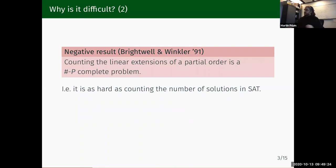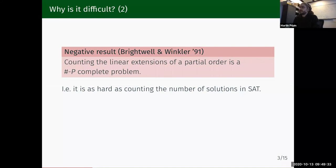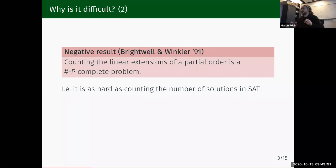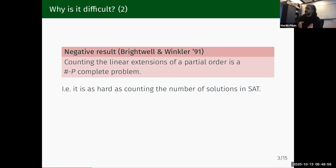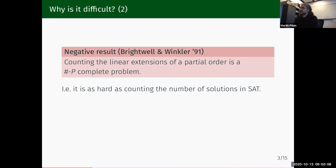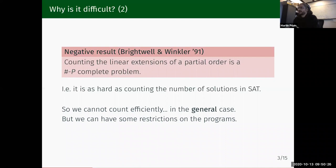The first issue we face is this result from Brightwell and Winkler, which states that counting the number of linear extensions of a partial order is a #P-complete problem. A partial order is really like a concurrent program — you have a bunch of actions and constraints between them, saying that action A must be run before action B. Counting linear extensions corresponds exactly to counting schedulings. #P-complete means it's as difficult as counting the number of solutions in SAT — strictly more difficult than checking satisfiability, more difficult than NP-complete problems. So we are definitely not going to try to solve this in the general case.